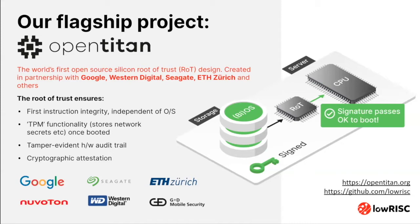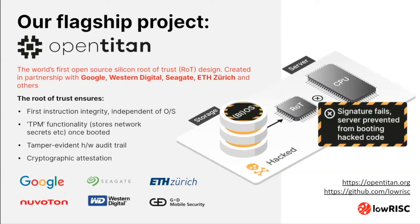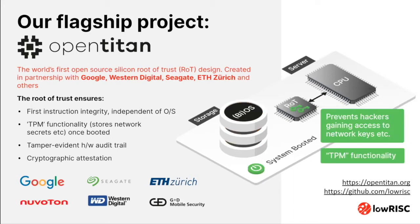OpenTitan is designed to be the blueprint for a standalone security chip — a silicon root of trust — for use in both data center servers and endpoints like laptops to guarantee critical security properties. For example, secure boot: the root of trust checks that the BIOS signature is valid and allows it to boot, or prevents it from booting if it's been hacked or corrupted — independently from the operating system. It also provides a secure place to store things like network keys, reducing the attack surface.